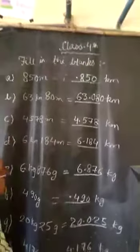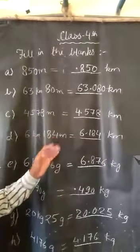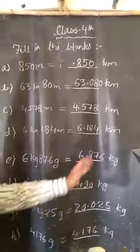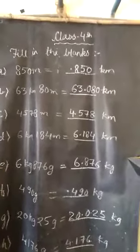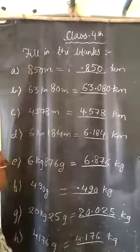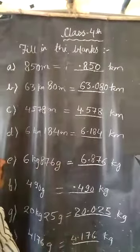Here, the question: 6 kilometers 184 meters. As usual, we divide it by 1000 to make it kilometers. When we divide it, it will be 0.184 kilometers. Then we add kilometers to kilometers. Here, 6 kilometers, and after changing, it will be 0.184 kilometers.